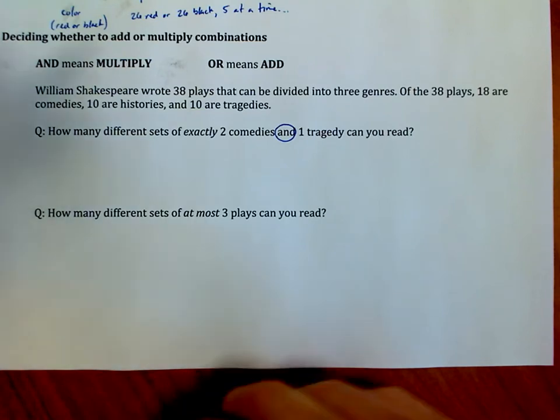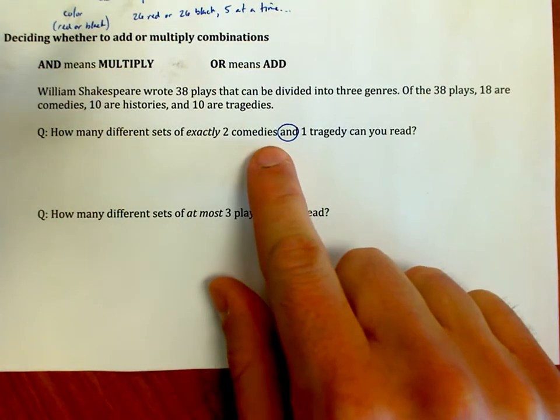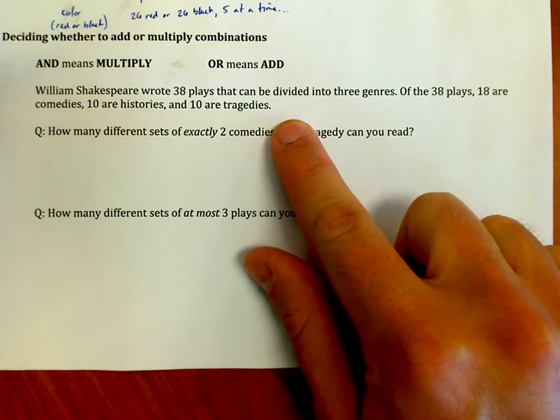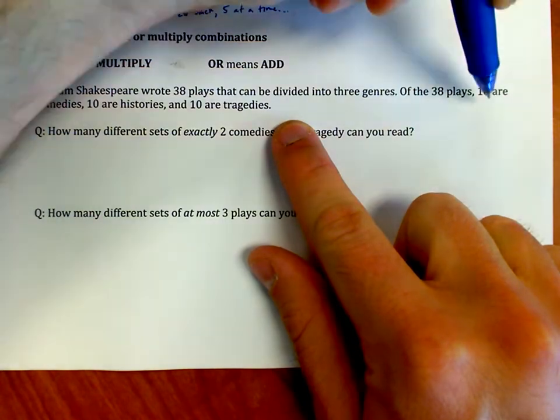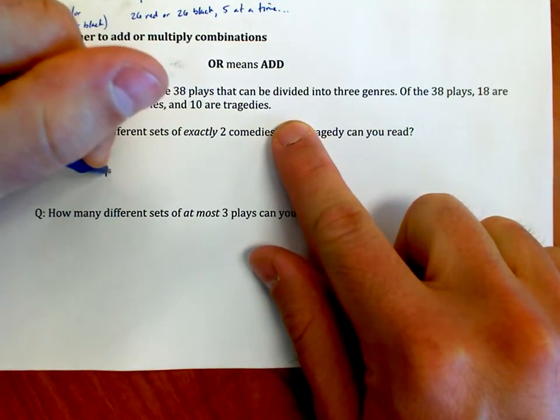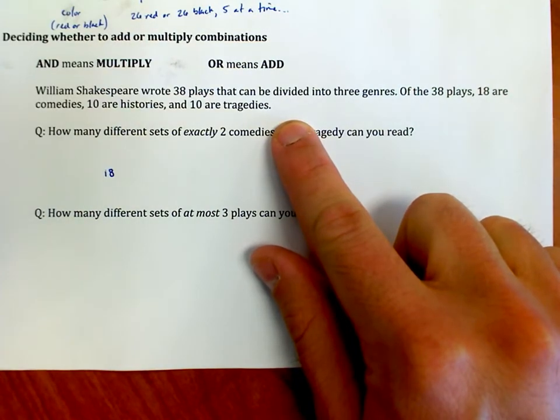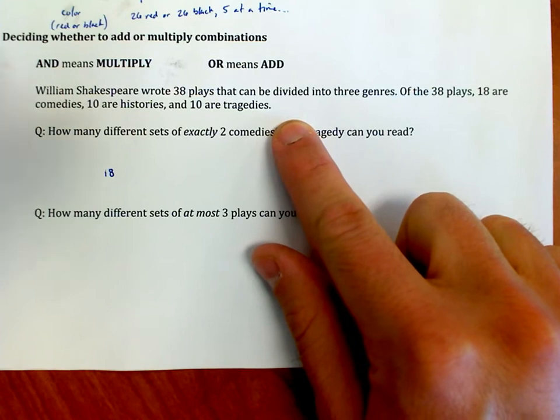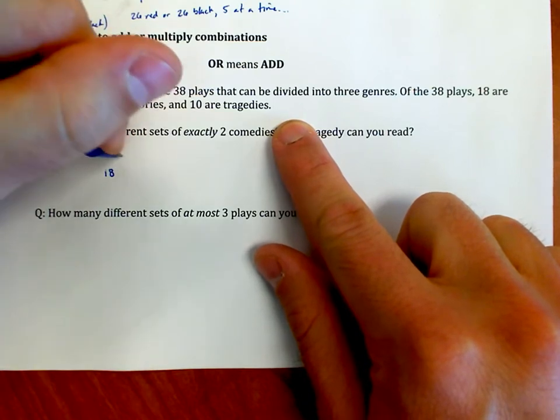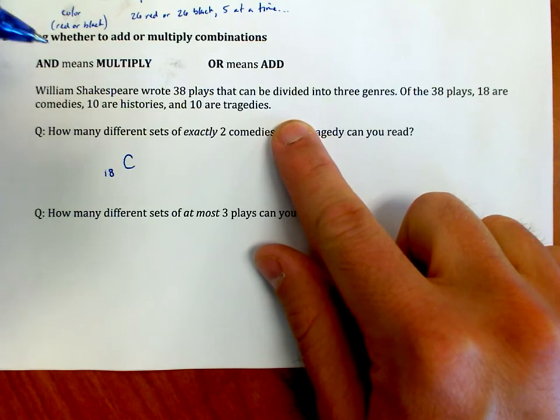And so what I do is I come up here and I say, well, what are the, how many ways can I read two comedies, right? So out of these, I notice that there are 18 comedies to choose from, right? 18 are comedies. So I have 18 things that are comedies. It doesn't matter which one I read first and which one I read second. I just need to read two of them. So order doesn't matter. There's a combination problem. I'm going to choose of those 18 comedies. I'm going to choose two at a time.